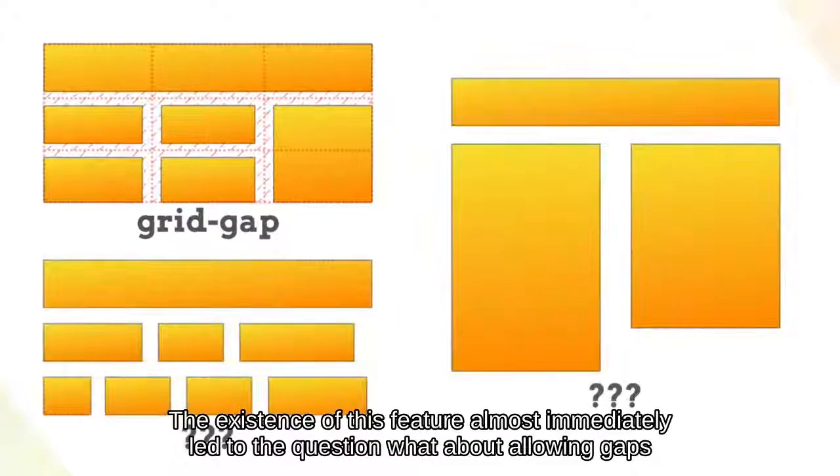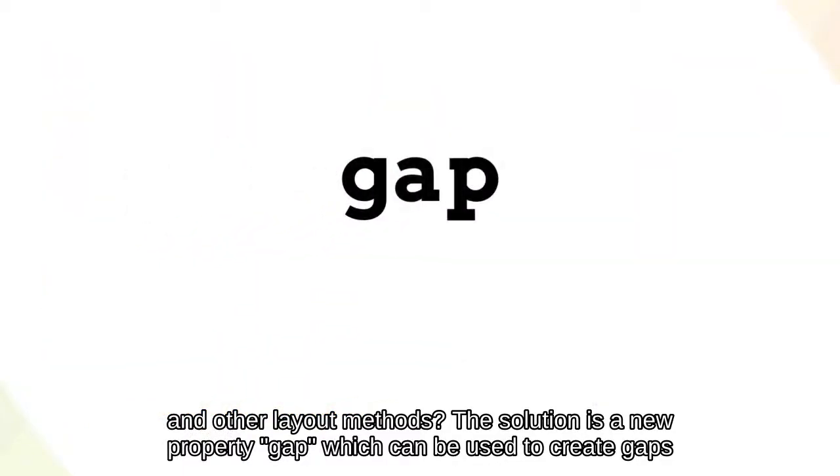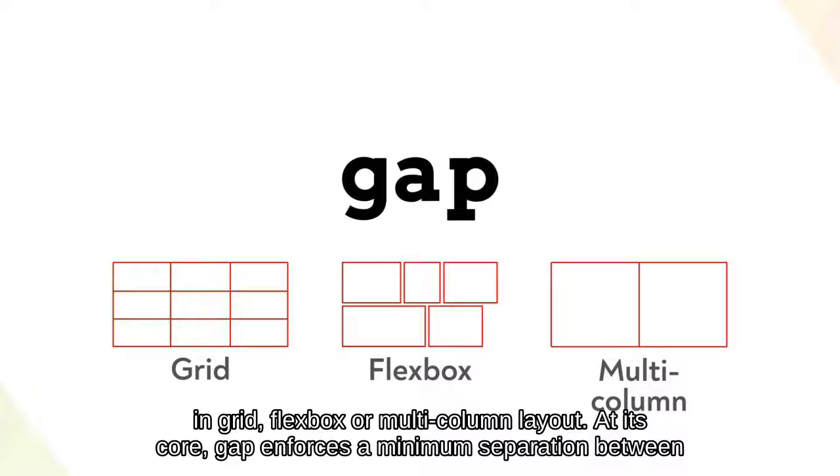The existence of this feature almost immediately led to the question: what about allowing gaps in other layout methods? The solution is a new property, Gap, which can be used to create gaps in grid, flexbox, or multi-column layout.